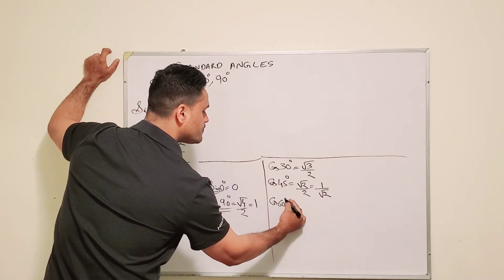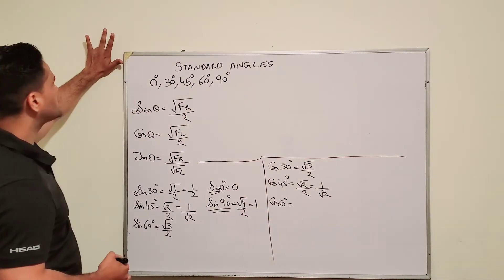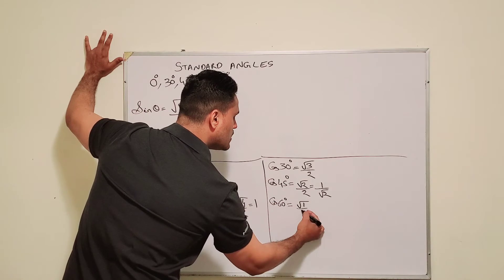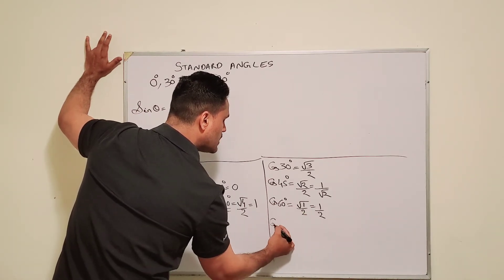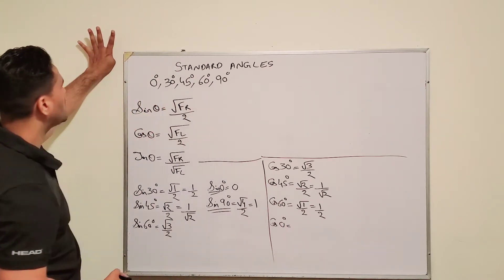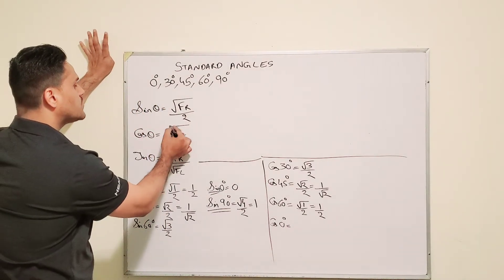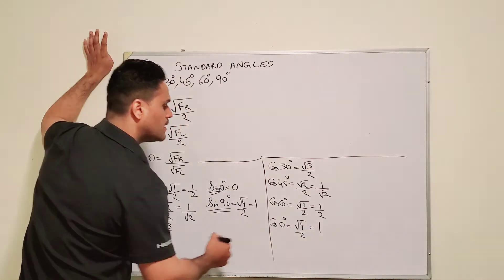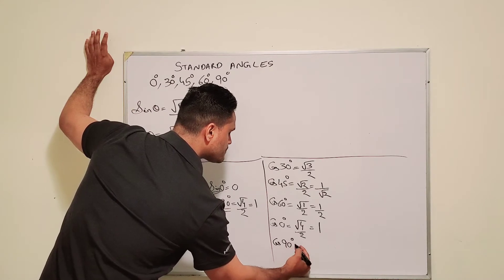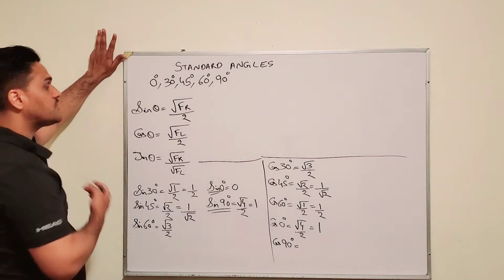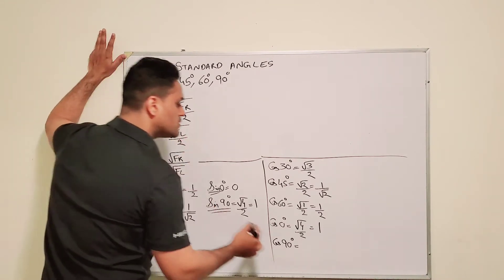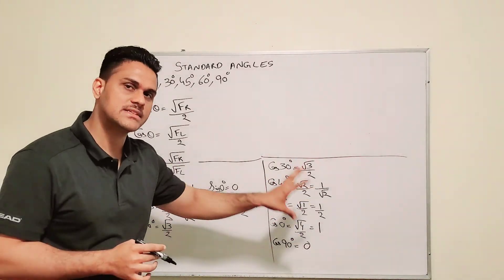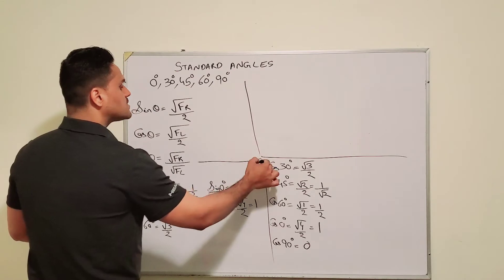For cos 60, we bend our 60 degree finger — I only see one finger on the left — so it's square root of 1 over 2, which is 1 over 2. For cos 0, we bend the 0 degree finger and see four fingers on the left: square root of 4 over 2, which is 2 over 2, which equals 1. And cos 90 — we have no fingers on the left — so it's square root of 0 over 2, which is 0. So we now have all the standard angles for sine and cos.